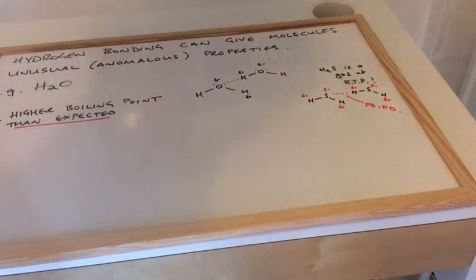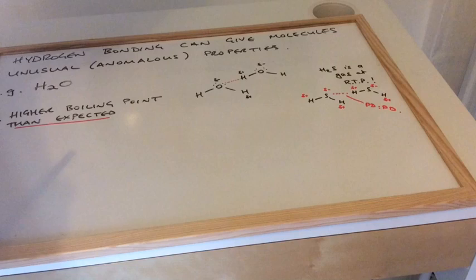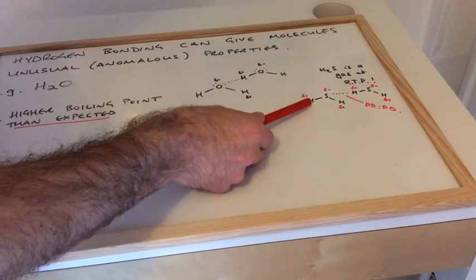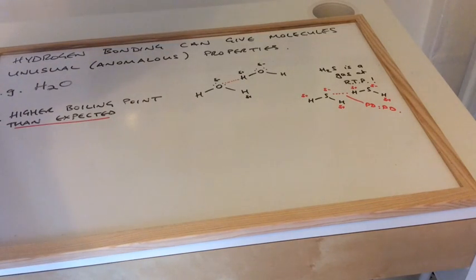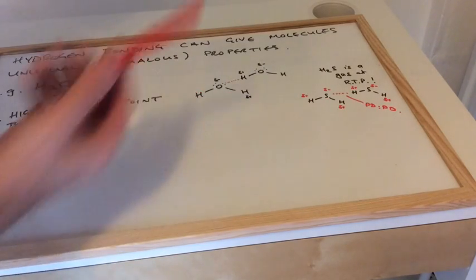I hope you can make out my scribble in the corner there. There's two hydrogen sulfide molecules. But because we haven't got an H bonded to an F, an O or an N, we can't call these hydrogen bonds. They're permanent dipole-permanent dipole forces, which are weaker than hydrogen bonds. So it's easier to turn this into a gas. And as a result, it is a gas at room temperature and pressure.